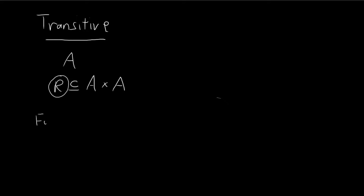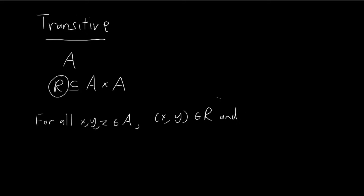If we know that for all elements x, y, z that are elements of A, if x, y is an element of R, and y, z is an element of R, and that this fact immediately implies that x, z is an element of R — if we know that this statement is true, then we can say R is transitive.